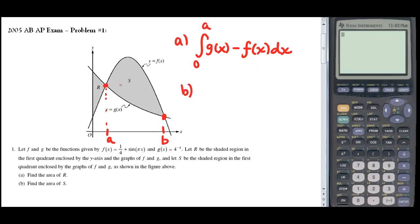And then part B, our top and bottom functions have switched, so part B, which is finding the area of region S, would be the integral from A to B of F(x) minus G(x), my top curve once again, minus the bottom curve.